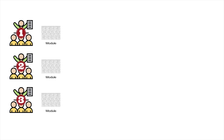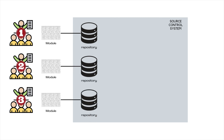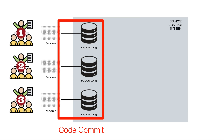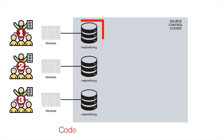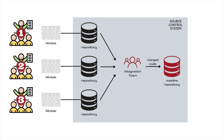These modules, which are nothing but pieces of independent software written in human-readable language, are then checked into separate folders or repositories on the source control system. This checking in of code to the source control system is also called committing the code. The three teams may check in or commit code to their folders multiple times during the sprint. Then, at the end of the sprint, the integration team collects the code from these different repositories, merges it, and stores the merged code in a separate folder, also called the mainline repository, on the same source control system.